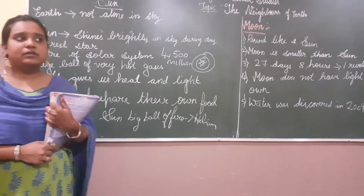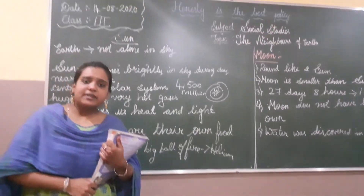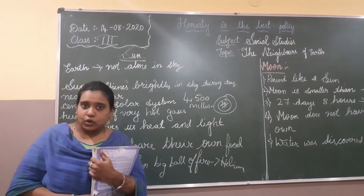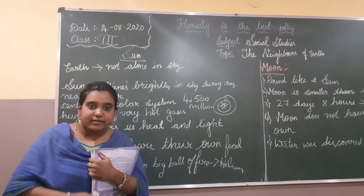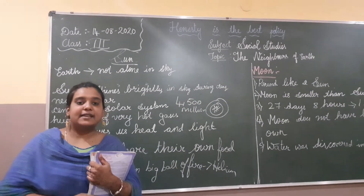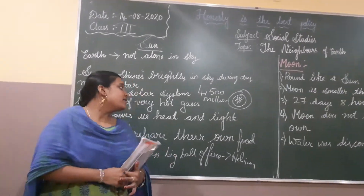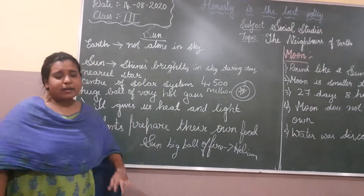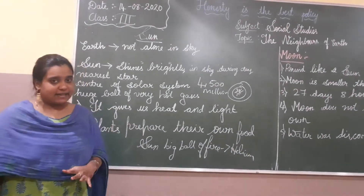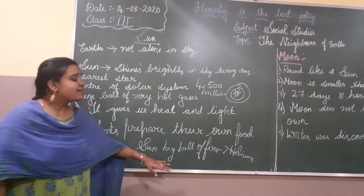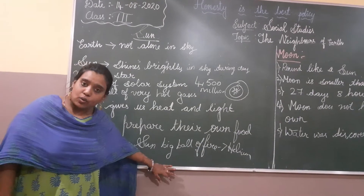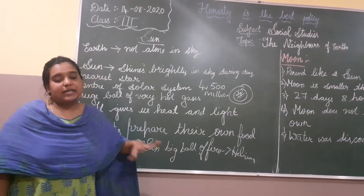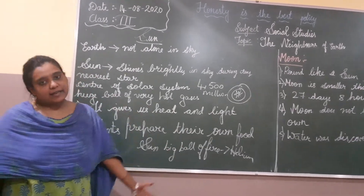Why do we need the sun? If there is no sun, we cannot see daylight. Because of the sun, we see in the daytime. Sun produces its own heat and light, and because of that heat and light we get daylight. Once the earth changes its direction and rotates away from the sun, it becomes dark — that is night.